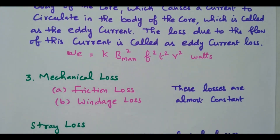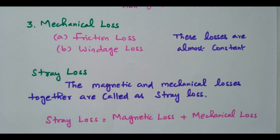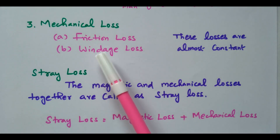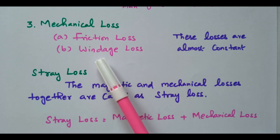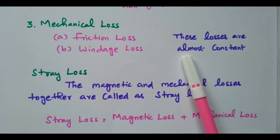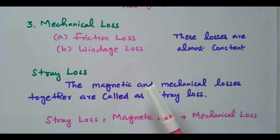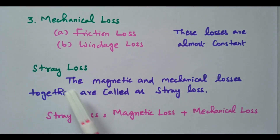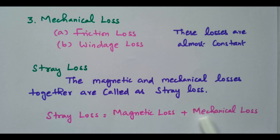The third type is mechanical loss. Due to friction and windage, some losses will occur — that is called mechanical loss. Windage is the force between the rotor and the air. This loss is also almost constant and will not vary with the current. The magnetic loss and mechanical loss together are called stray loss, since both are constant. Adding these two gives us what is called stray loss.